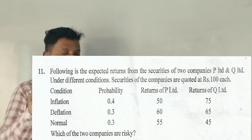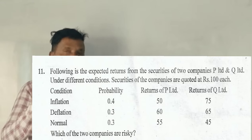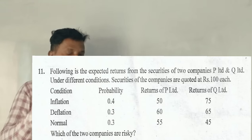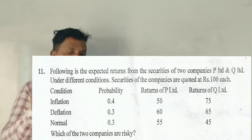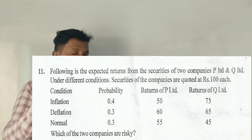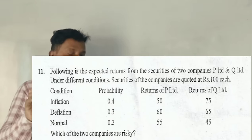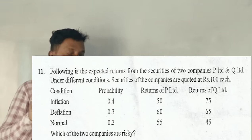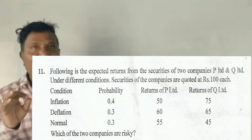Returns of P Limited are Rs. 50, Rs. 60, Rs. 65. Returns of Q Limited are Rs. 75, Rs. 65, Rs. 45. The probability for each condition is 0.4, 0.3, and 0.3 respectively. The question asks: which of the two companies is more risky?